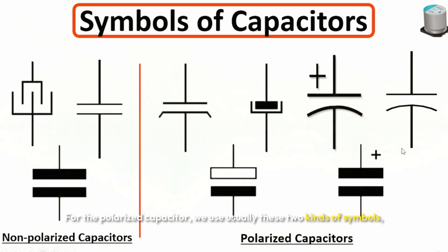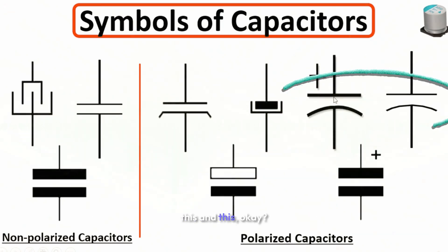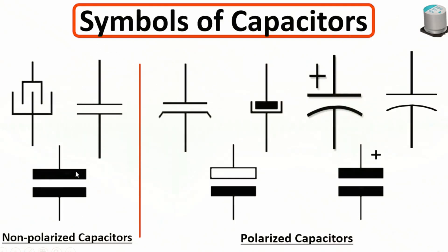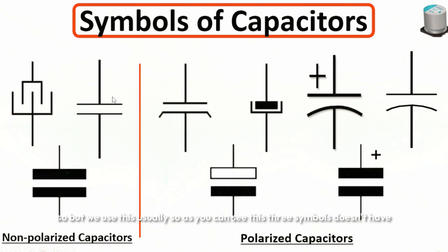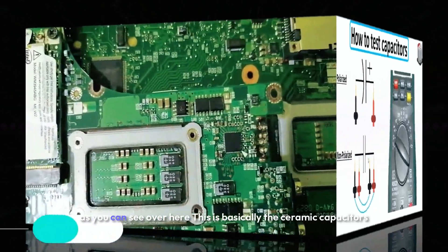For polarized capacitors we usually use these two symbol types. For non-polarized capacitors we have three symbols, but we typically use this one. There is also a UK symbol and a US symbol. As you can see, these three symbols don't have plus and minus signs because they are non-polarized capacitors.